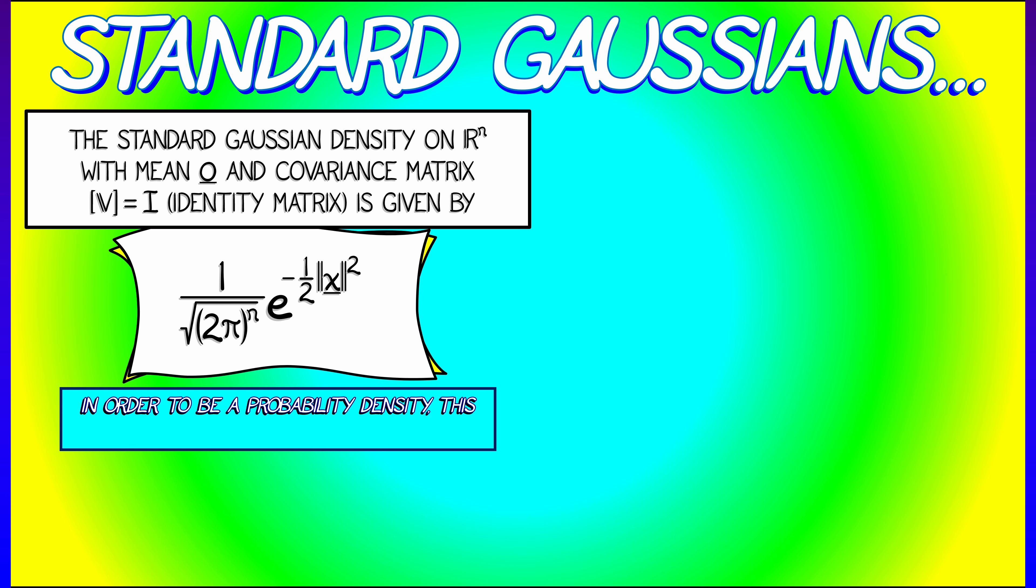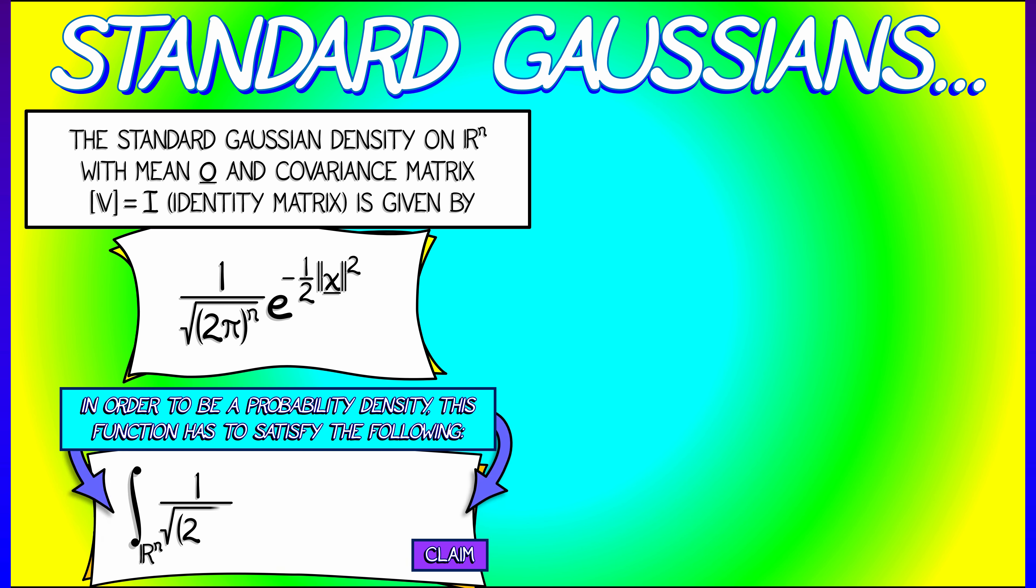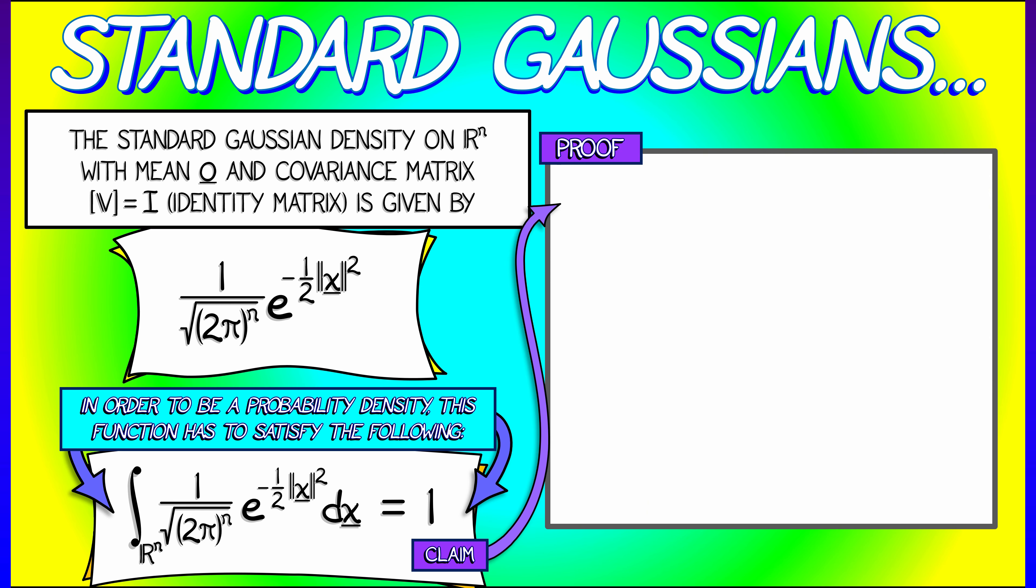Now in order to be a probability density, this has to satisfy the property that when we integrate it over all of R^n, we get 1. Is that true? Yes, of course. It's true.